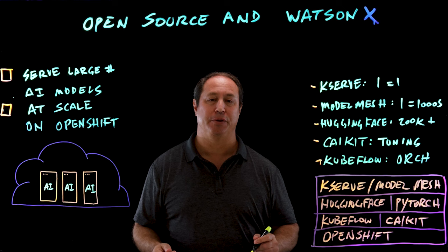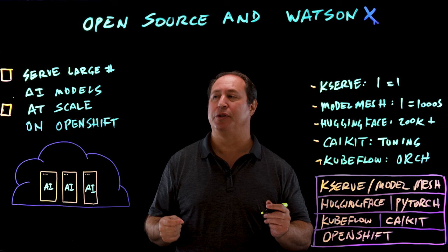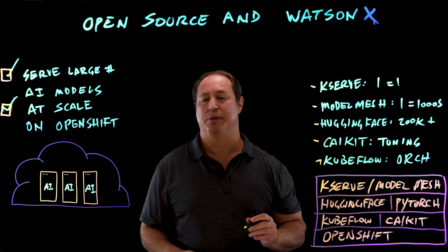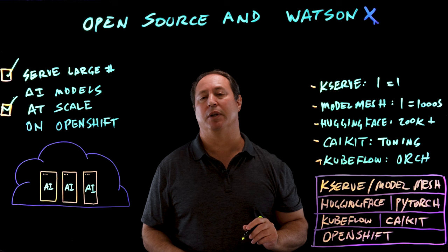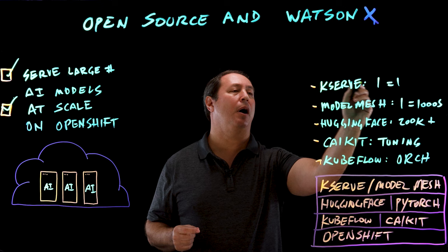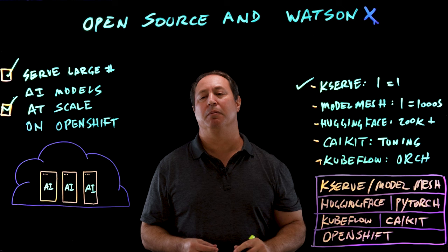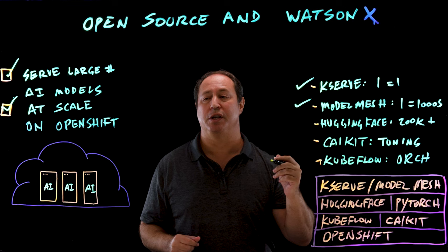Now let's look at model tuning and inferencing. We want to be able to serve a large number of AI models at scale on OpenShift. The first key open source project is KServe ModelMesh, which we use to actually serve up the models. Originally there was just KServe, which would put one model in a single pod — one pod per model — which is not very efficient. KServe was merged with another open source project called ModelMesh, which is much better at efficiently fitting thousands of models into a single pod, so we're able to serve up thousands of models efficiently on an OpenShift cluster.